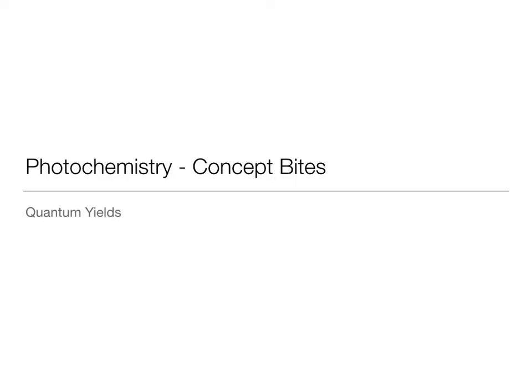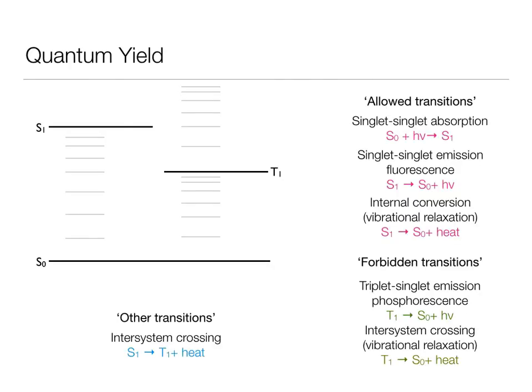So here I just want to explain a little bit more about what we mean by this term quantum yield. If I look at my Jablonski diagrams and the processes that can occur, all of these individual processes have a certain probability of occurring.